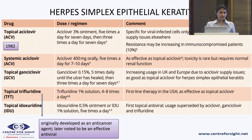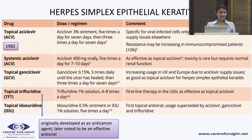Systemic acyclovir in a dose of 400 mg orally, 5 times a day for 7 to 10 days, is as effective as topical acyclovir and toxicity is rare, but it includes monitoring of normal systemic functions like kidney and liver functions. Topical ganciclovir, available as 0.15%, is given 5 times daily till the ulcer is healed, then 3 times a day for the next 7 days. Its usage is increasing in the US and Europe, but not in India.